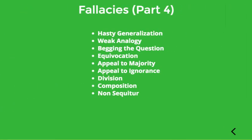In this video and the last, we discussed the following fallacies: hasty generalization, weak analogy, begging the question, equivocation, appeal to majority, appeal to ignorance, division, composition, and non sequitur. There are certainly more kinds of fallacies out there, but we've covered a very representative sample of the kinds of bad reasoning you're likely to encounter. It can be really useful to be able to spot these errors and point them out to people if they're trying to use them to win an argument.